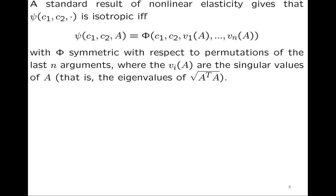It's well known in non-linear elasticity that an isotropic energy function can be represented as a symmetric function of the singular values v₁,...,vₙ of the matrix A — the square roots of the eigenvalues of AᵀA. So our condition is satisfied if φ can be written as a function of c₁, c₂, v₁,...,vₙ that's invariant under permutations of the vᵢ. We also require that φ(c,A) = 0 if and only if c₁ = c₂ and A is a rotation.